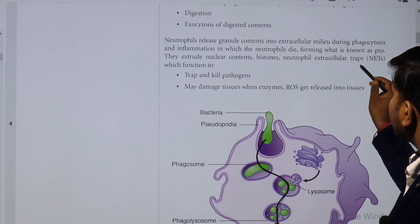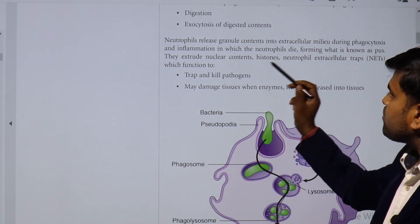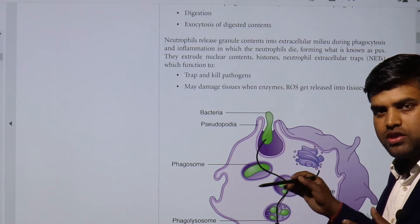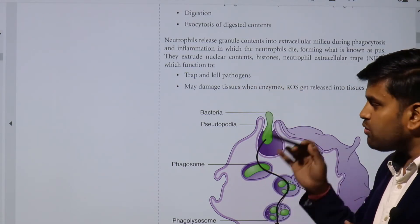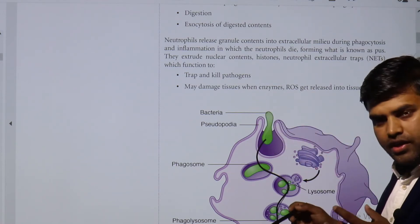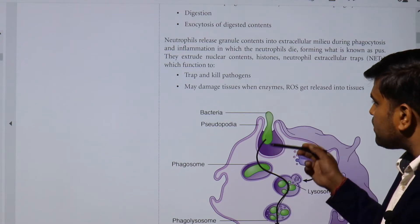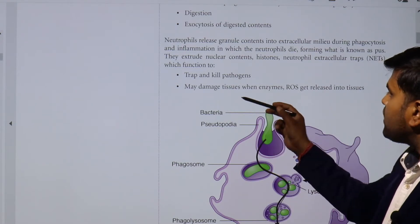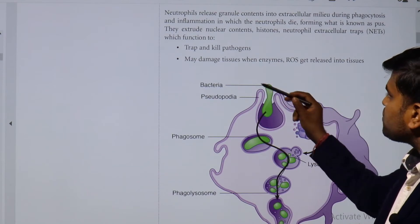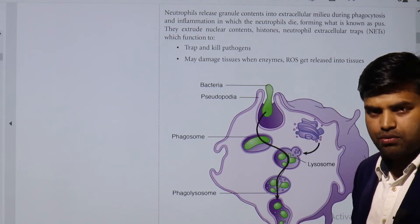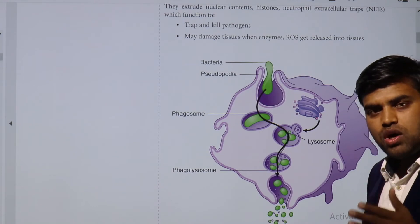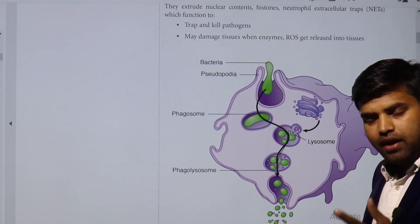The neutrophil forces out all intracellular content to trap and kill the pathogen. Since they are releasing enzymes and reactive oxygen species (ROS) from inside, this may damage the surrounding tissue. This was the process by which the neutrophil kills the organism and is also converted into pus.